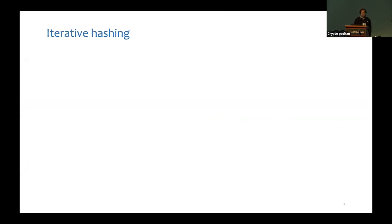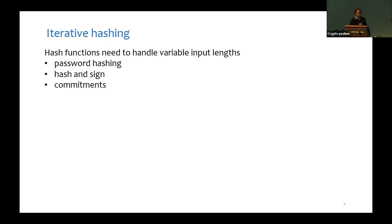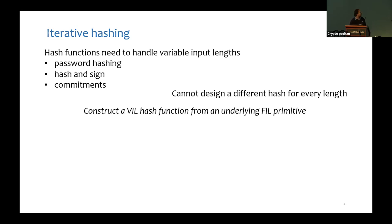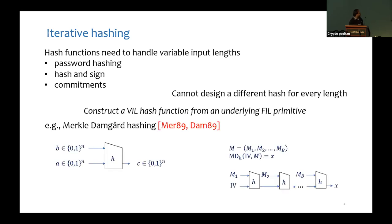Hash functions are one of the most fundamental primitives of cryptography and have many different applications. Certain applications like password hashing require a hash function to handle different input lengths, and it is infeasible to design a different hash function for every input length. Therefore, we use iterative hashing to design a variable input length hash function from an underlying fixed input length primitive. The most commonly used iterative hashing mechanism is the Merkle-Damgård design, where the fixed input length primitive is a compression function that takes 2n bits as input and outputs n bits, hashing a message by breaking it into blocks and repeatedly applying this compression function. This is used in constructions like MD5, SHA-1, and SHA-2.